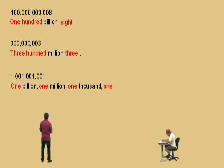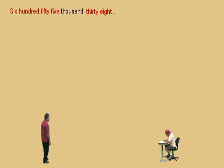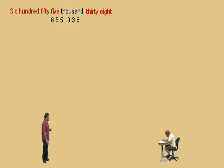Now we're going to work in reverse — here's a word statement and you're going to write out the numbers using digits. Six hundred and fifty-five thousand: Charlie writes 655 with a comma. Now we have only thirty-eight, so you've got to put a zero placeholder there because there are no hundreds — it's just thirty-eight, so you write 038. Our number, six hundred and fifty-five thousand, thirty-eight, is written 655,038.